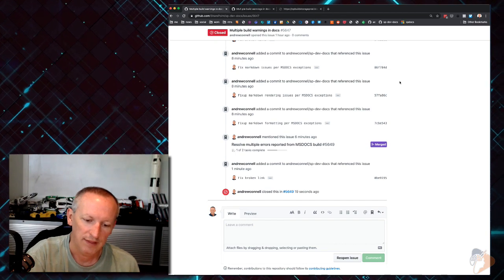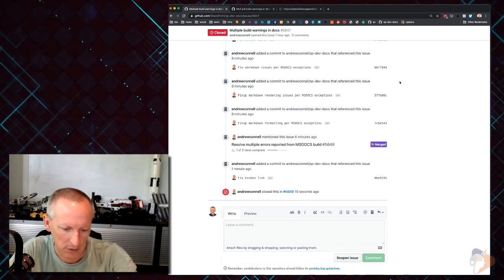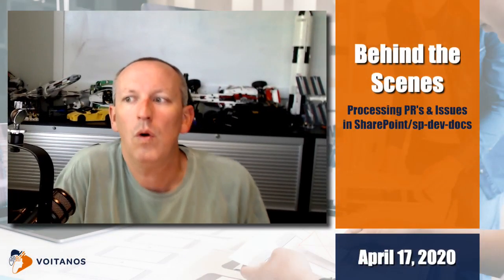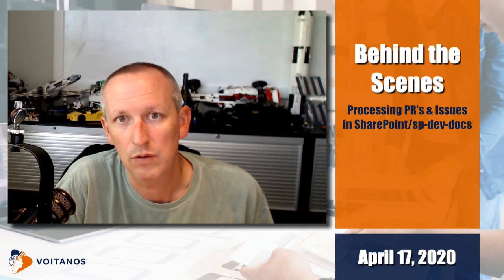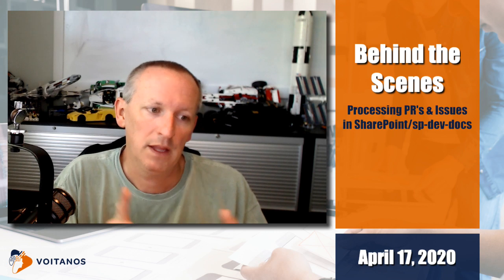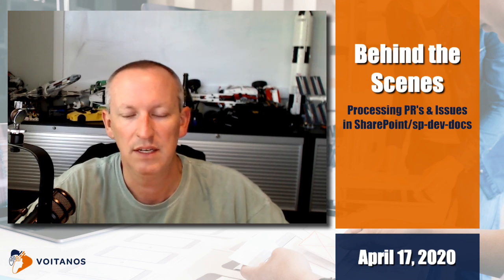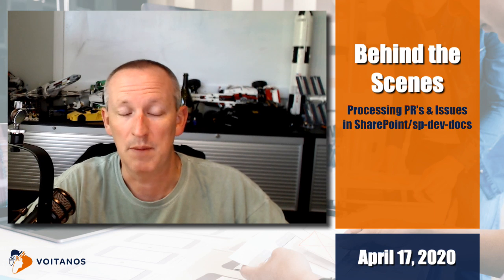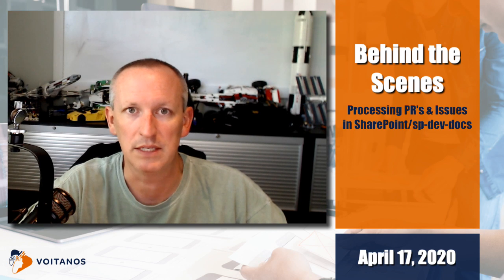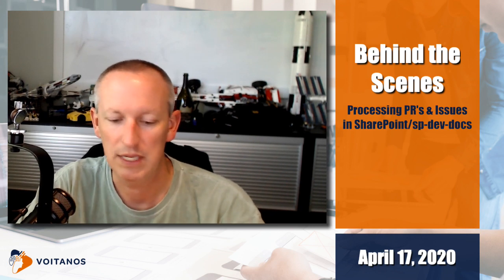Awesome. So now you've been able to see how to do a merge and contribute to the docs. The goal here was for you to see how to correctly update the docs - you saw how to refresh your fork, and also the process of editing things and making each fix an individual commit. Now I'm going to go find out who was writing those docs for Flow and Power Apps and make sure they don't make those same mistakes again. Thanks a lot for sticking around - I hope you learned something from this, I'll see everybody later.